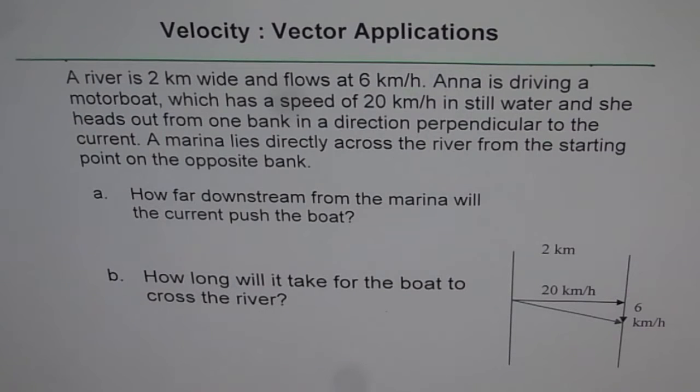The question here is, a river is 2 km wide and flows at 6 km per hour. Anna is driving a motorboat which has a speed of 20 km per hour in still water and she heads out from one bank in a direction perpendicular to the current.